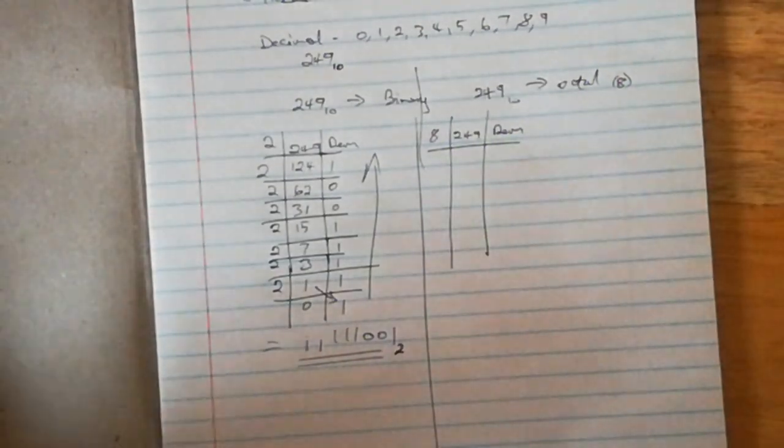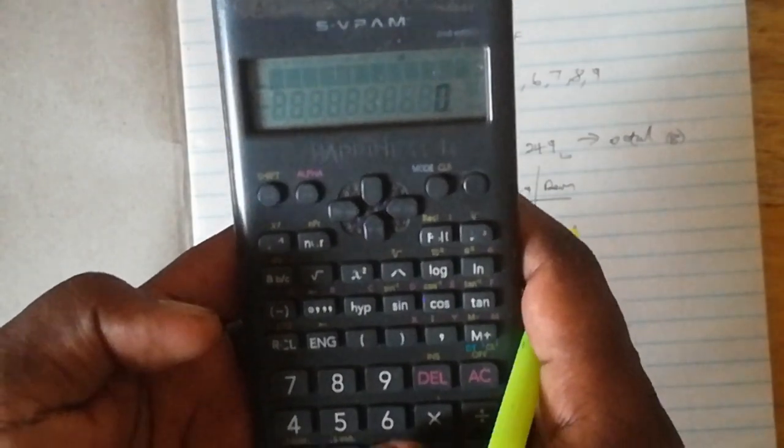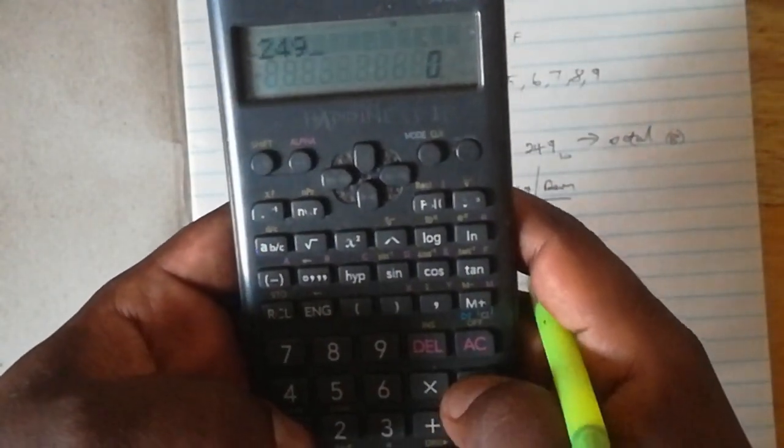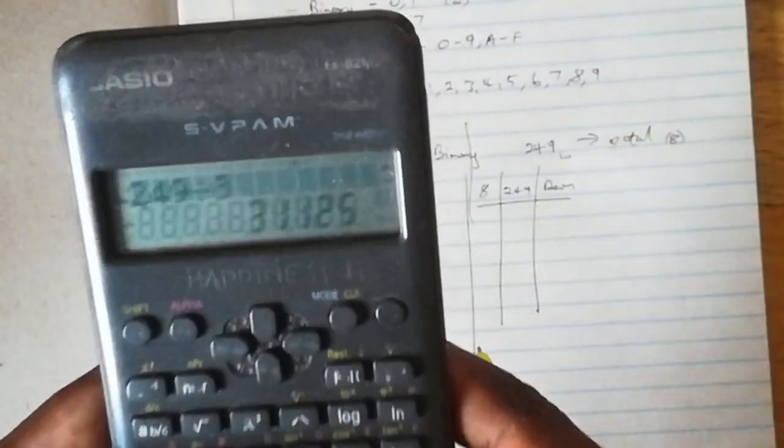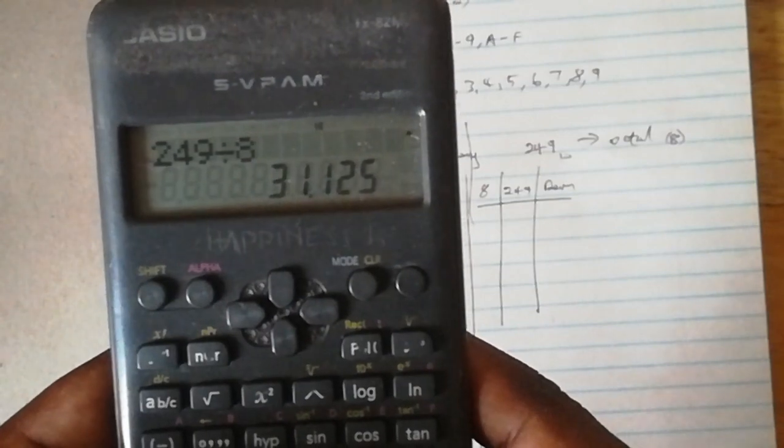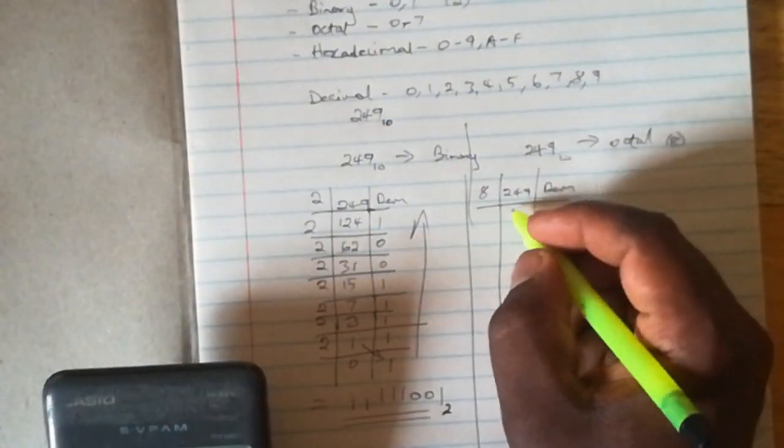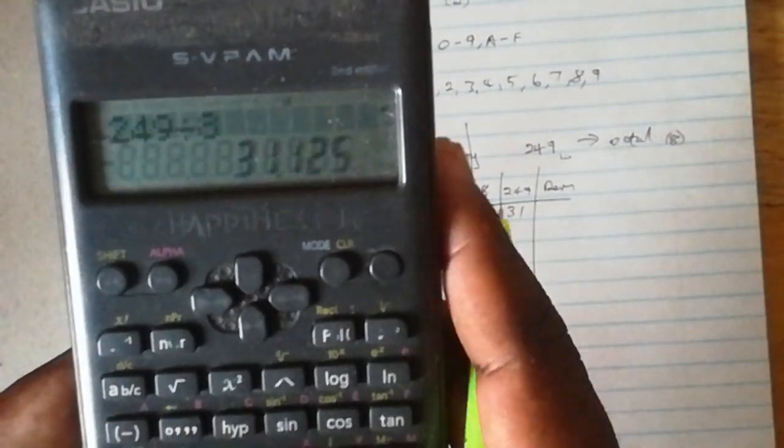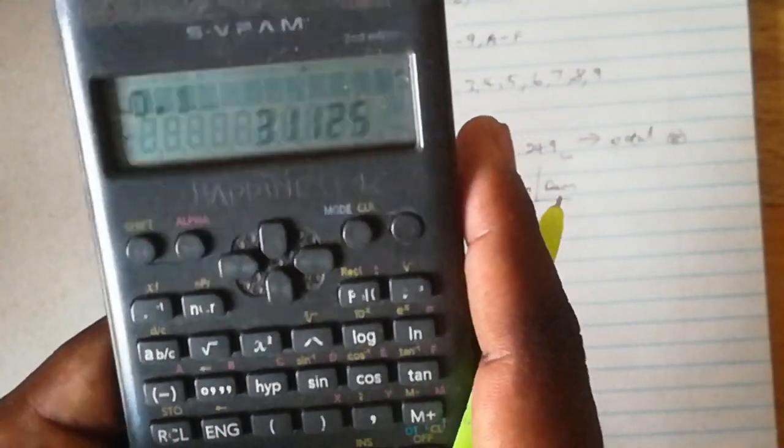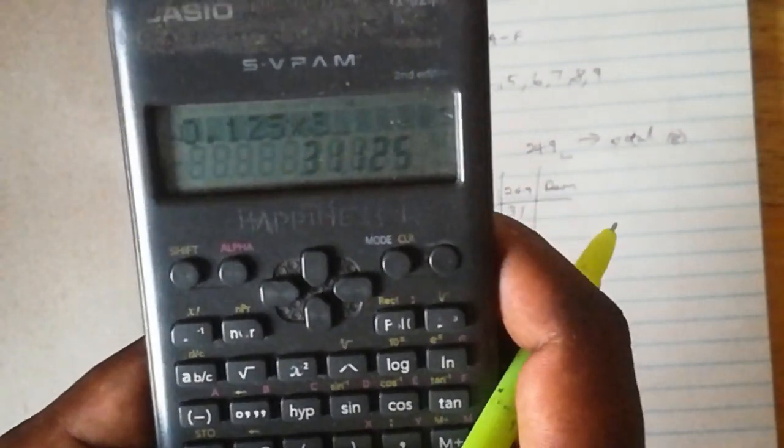I'll make use of a calculator to help us go through the sum quickly. You'll punch in 249 divided by 8 and the answer is 31.125. So I'll write 31 as my quotient, and 0.125 - I'll find the product of 0.125 by 8, which gives me 1. So that's my remainder.